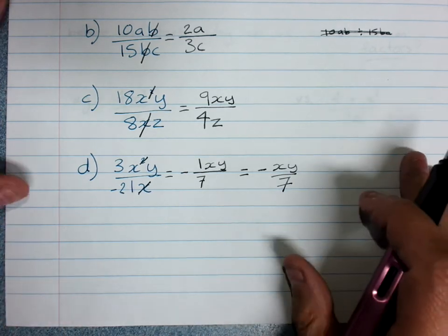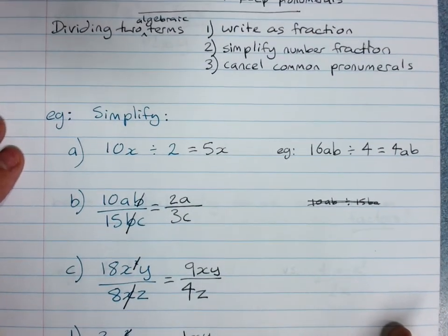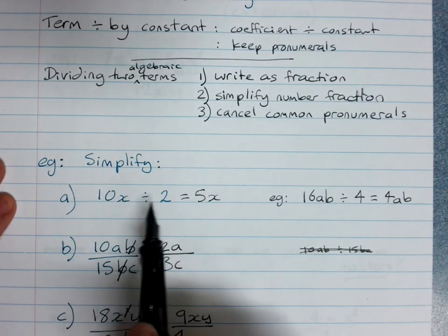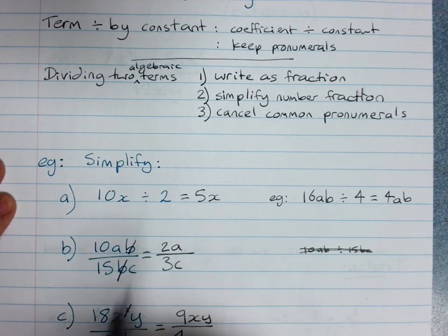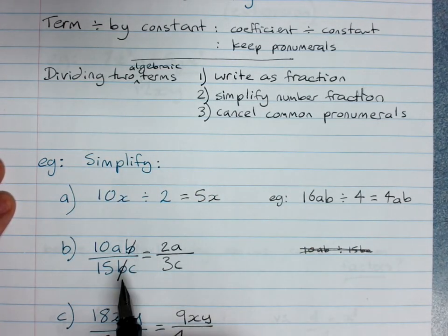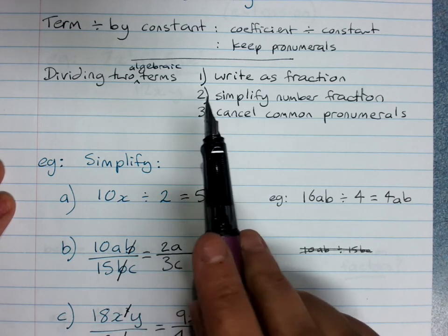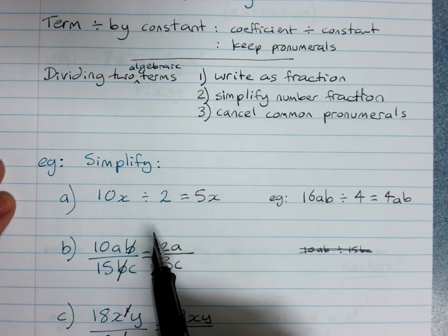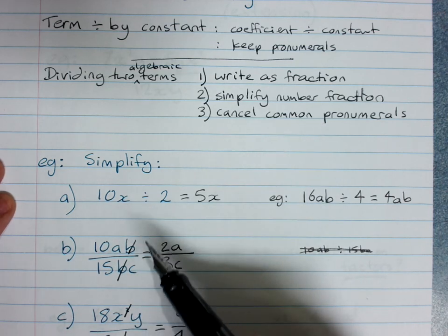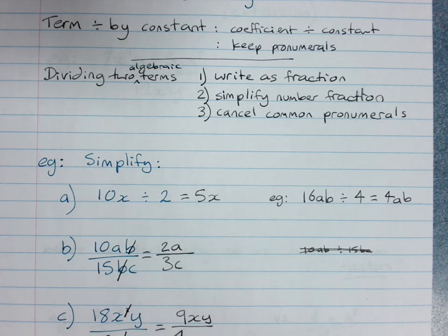So remember your steps. If it's just dividing by a number, then just do the division with the numbers and keep your pronumerals in. But if you're dividing two algebraic terms, make sure they're a fraction. Simplify the number fraction and put the answers in. Then cancel any pronumerals that are on the top and the bottom.